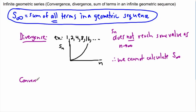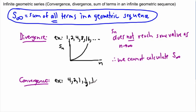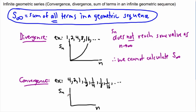What about convergence? Let's take the opposite example: a sequence that goes 4, 2, 1 — dividing by 2 each time. Continuing: 1 half, 1 fourth, 1 eighth, 1 sixteenth, and so on. Now let's look at a graph of n versus the sum of all the n values.